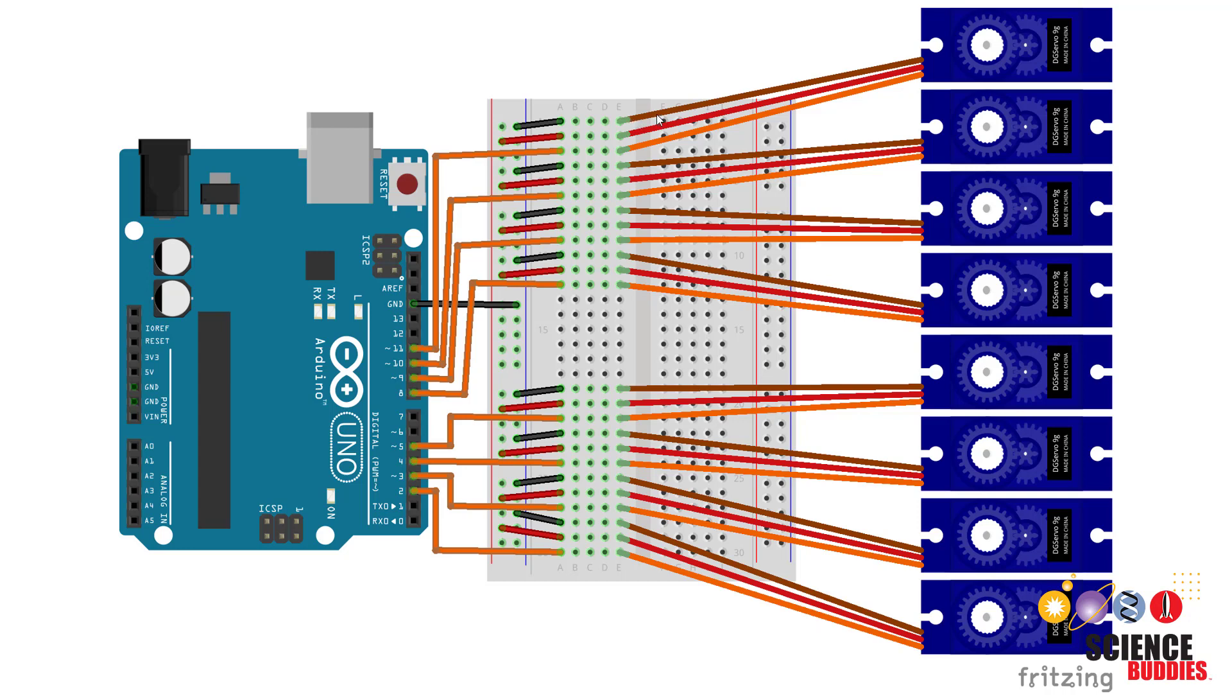The colors may vary depending on the manufacturer but for the servos we used in this video brown is ground, red is power which we'll talk about in a minute, and orange is signal. So connecting the servo cables to your breadboard using male male header pins, the brown wire would go to your ground bus, the red wire would go to your power bus, and the orange wire would go to one of the Arduino's digital pins.